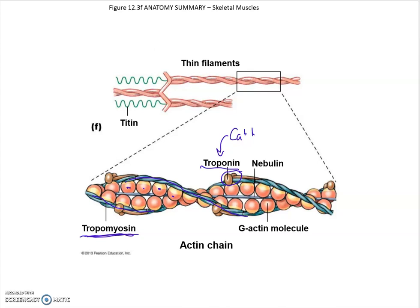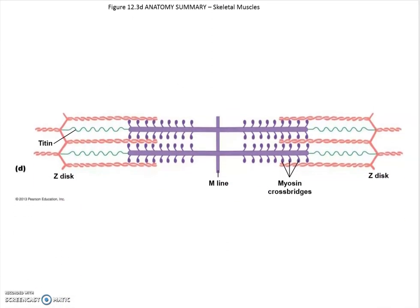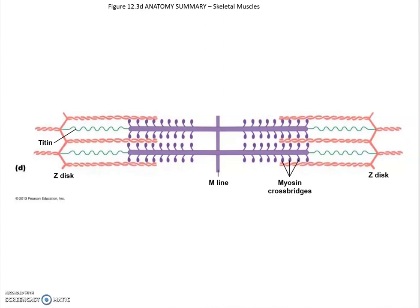Continuing our discussion of the sarcomere, the main players are actin and myosin, along with the two additional regulatory proteins troponin and tropomyosin. In this diagram, the pink outline represents the actin framework, the purple molecules are myosin with their heads sticking up, and there are titin springs in gray holding the myosin in place.